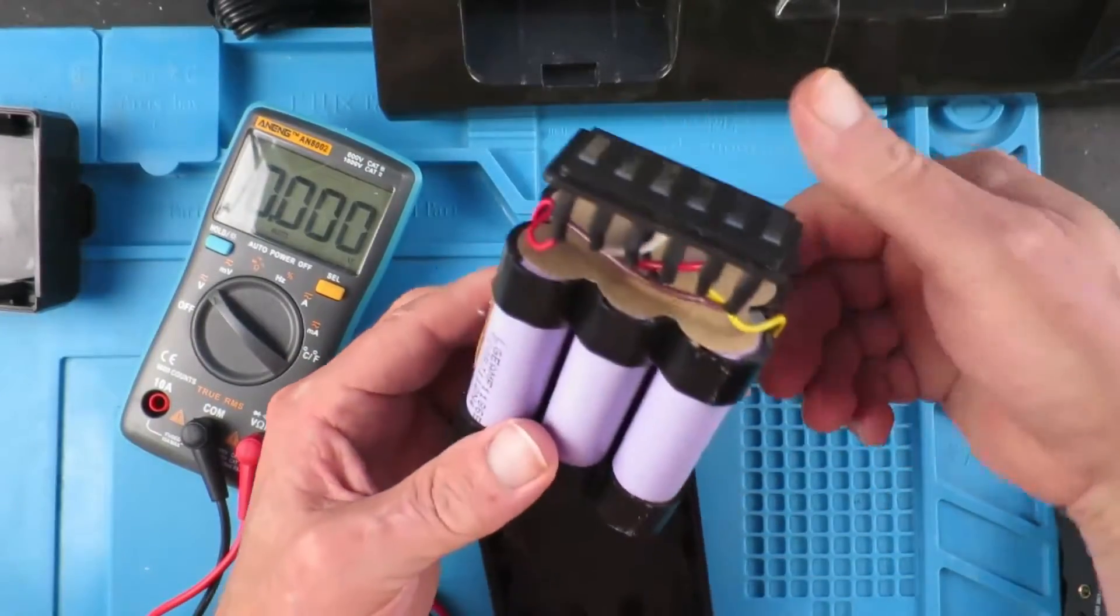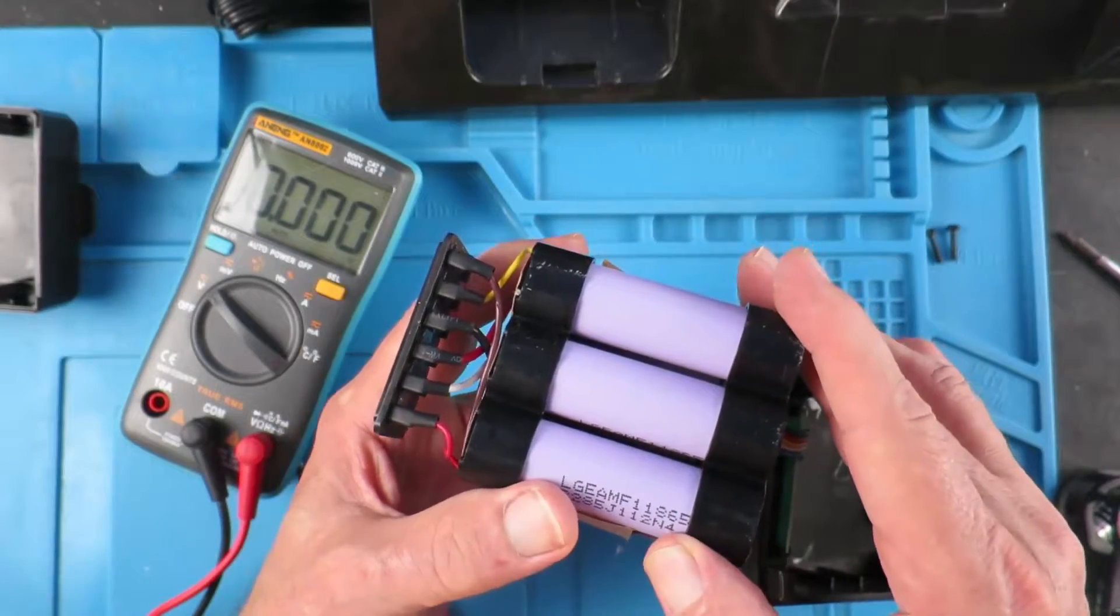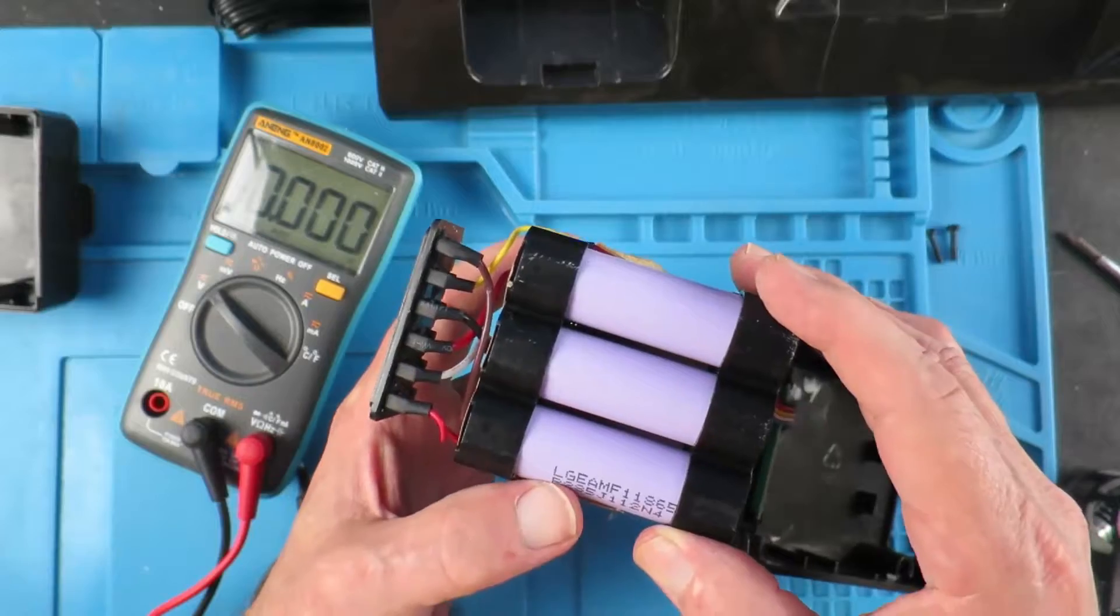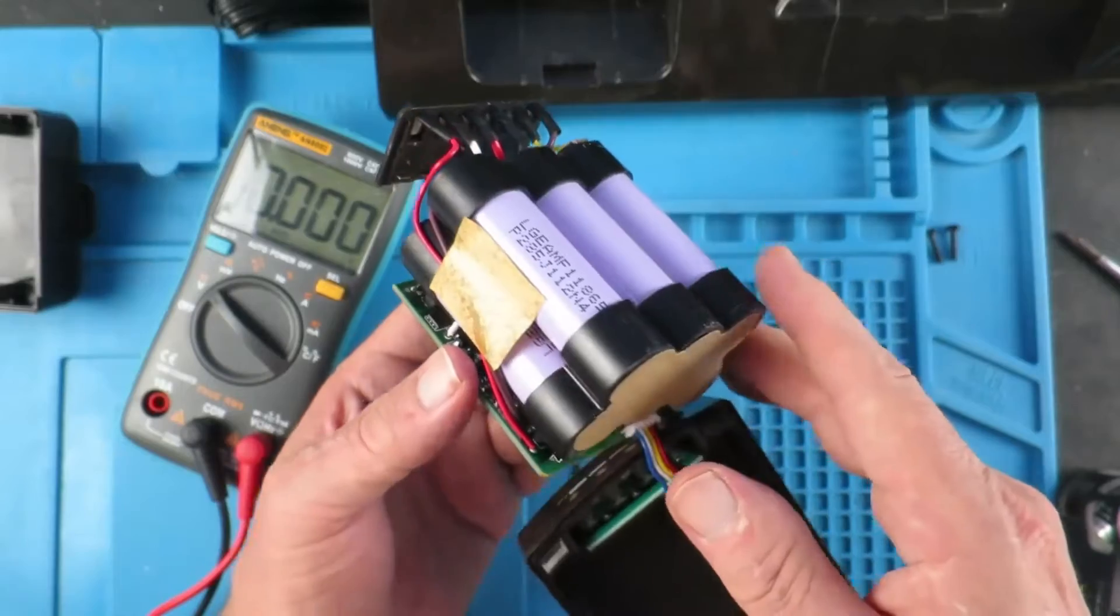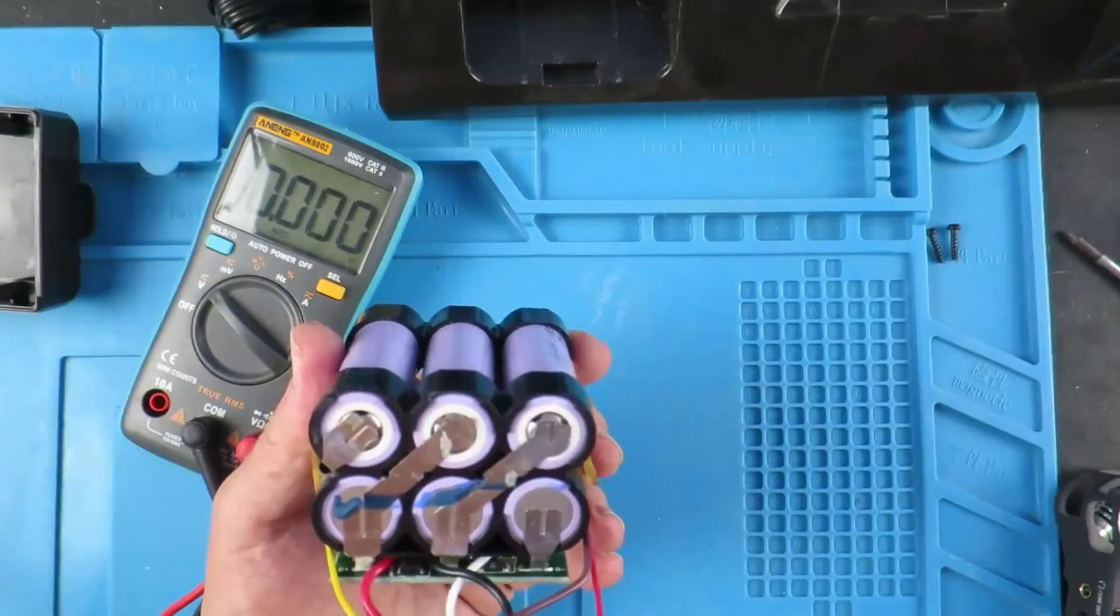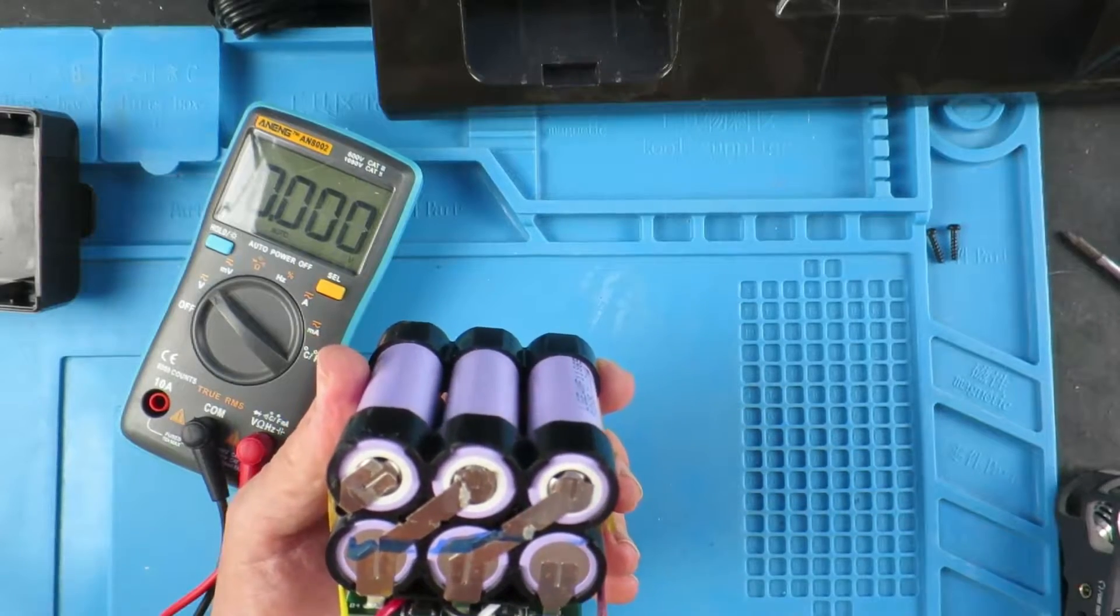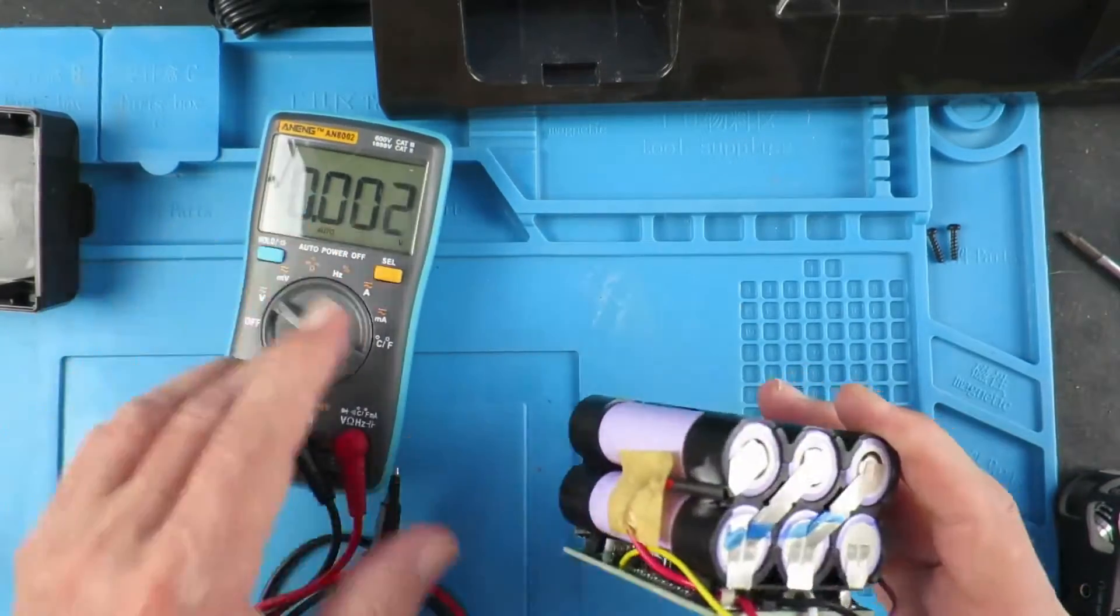The whole of this is removed and we can see that it is indeed 18650 cells, possibly LG which is normally a reasonable type. So now we should be able to measure across each individual cell and see what voltages they are.